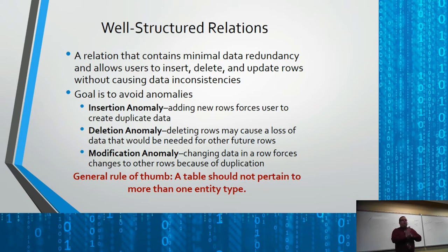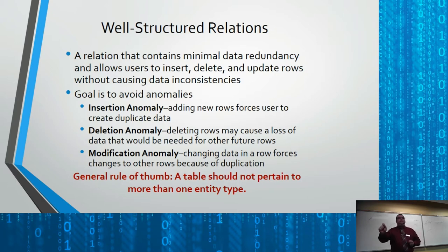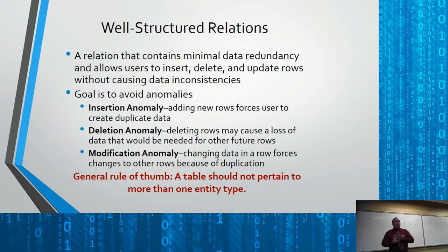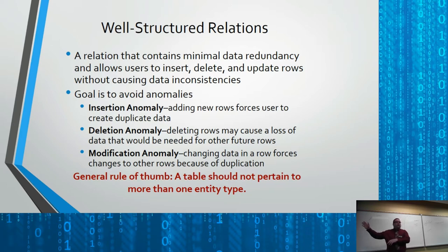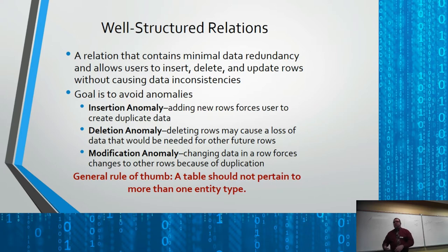The goal is to avoid anomalies, and there are three kinds. An insertion anomaly is when you add a new row of data and it forces you to create duplicated data. A deletion anomaly is when you delete a row of data and lose data that might be needed in the future — you delete a chunk and it takes other stuff with it. A modification anomaly means if you change one row of data, you end up having to change many rows to accomplish the same goal.